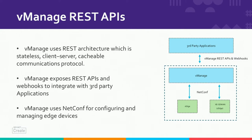Using webhooks, we could integrate with our ChatOps monitoring tools like Webex. On the southbound side, vManage uses NETCONF calls to either push configuration to the edge routers — the IOS XE SD-WAN routers — or to pull operational status and statistics from those edge routers.